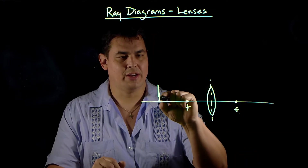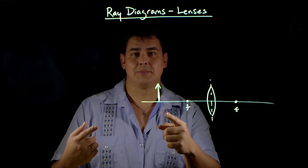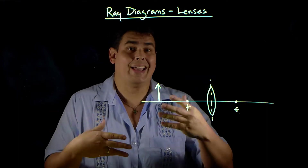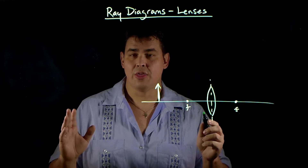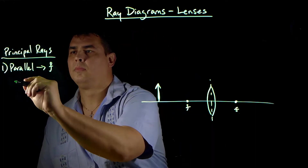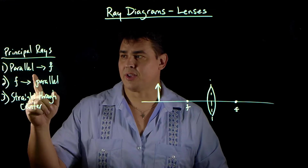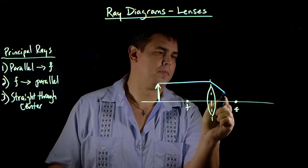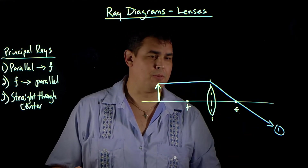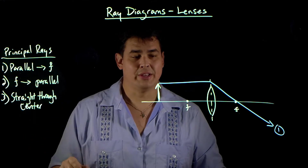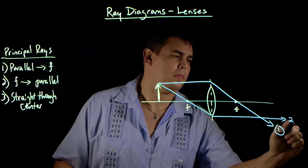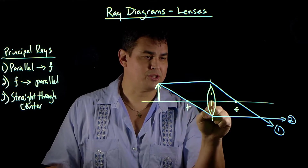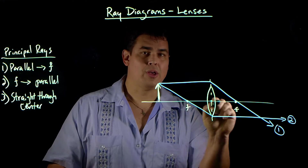I'm going to make an object as an arrow — the reason we use an arrow is that if the image flips, it'll point the other way, so I can tell if the image is inverted. To make a ray diagram, we draw three principal rays. Ray one goes parallel to the axis and then through the focal point. Ray two goes through the focal point and out parallel. Ray three goes straight through the center of the lens, and any ray going straight through the middle comes out unchanged.